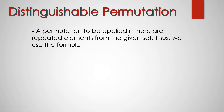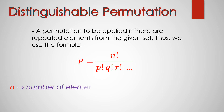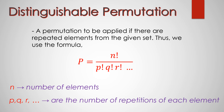This is a permutation to be applied if there are repeated elements from the given set. We use the formula P is equal to n factorial over p factorial, q factorial, r factorial. Here, n represents the number of elements from the given set, while p, q, r are the numbers of repetitions of each element, if there are any.